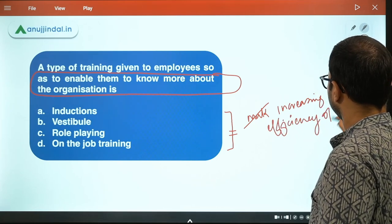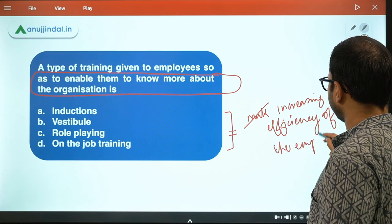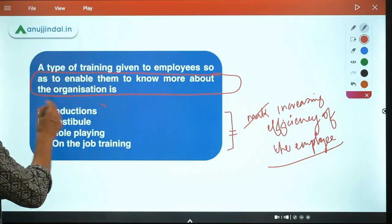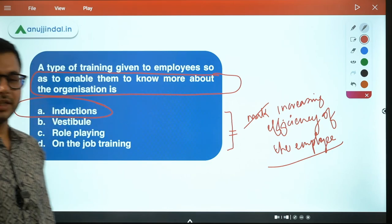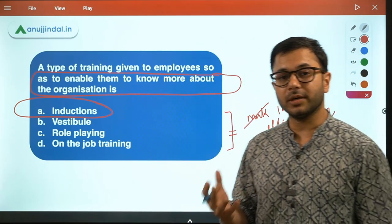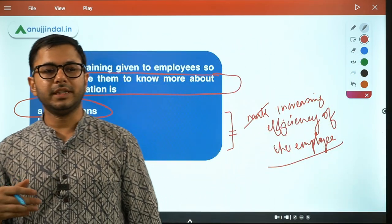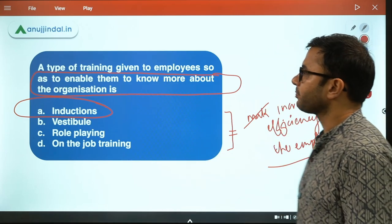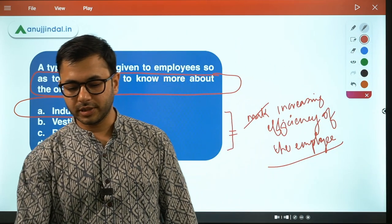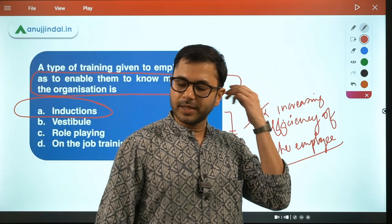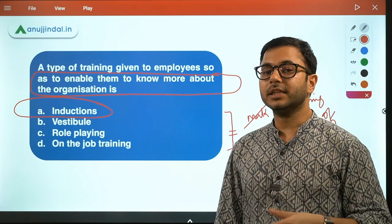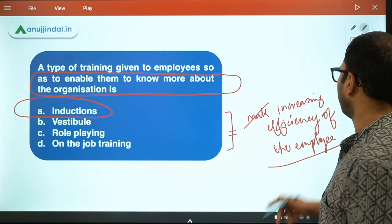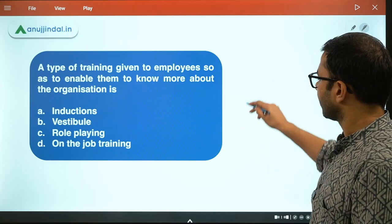Vestibule training, role playing, and on-the-job training are all focused on training the employee or increasing their efficiency. Induction is one type of training conducted as soon as a person enters an organization, and it is considered a type of training in which the employee is told about the organization. So the answer to this question is Option A - Induction. The other three are meant to enhance efficiency by teaching new things, not by telling employees more about the organization.